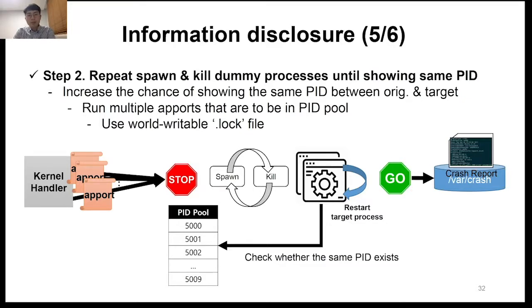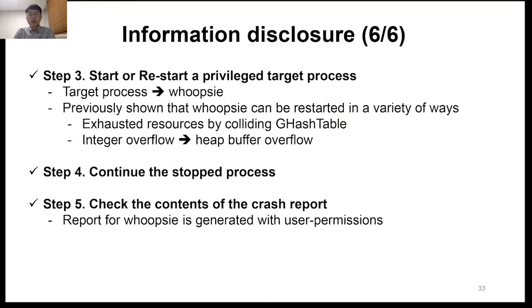The repetition is performed until the result is approaching the original PID. Just before the same PID comes up, when starting or restarting the target process, it succeeds if the same PID exists in the PID pool. Here we assume the target process is Whoopsie, because it is a privileged process and can be restarted at any time due to the previous vulnerability. Finally, if the same PID is found in the PID pool and a SIGCONT signal is transmitted to Apport, a crash report on the running target process is created with user permissions.